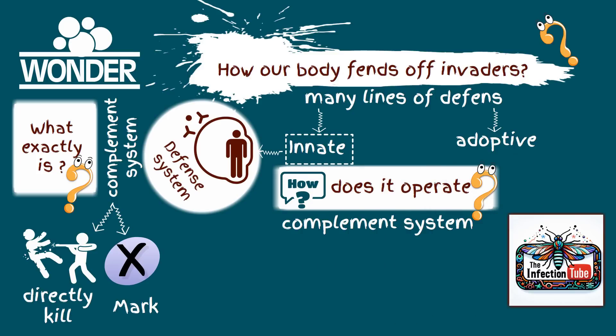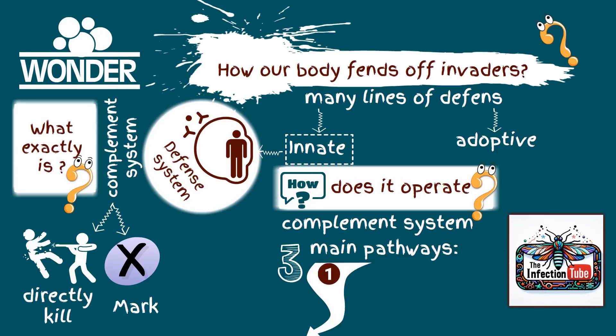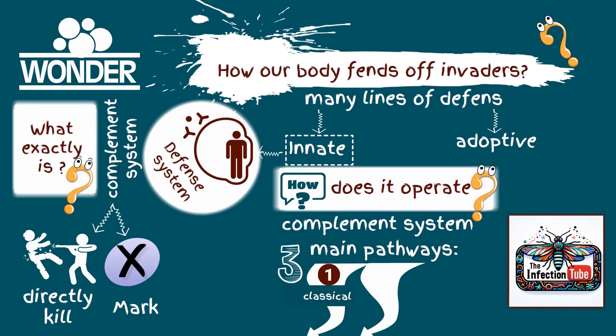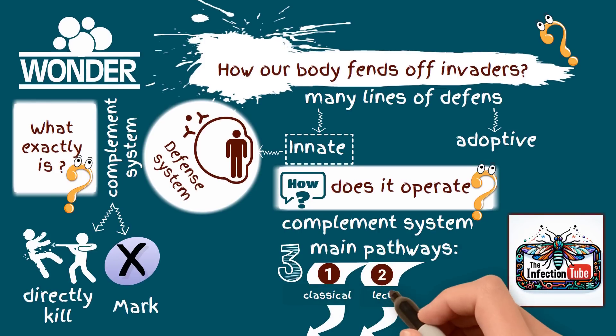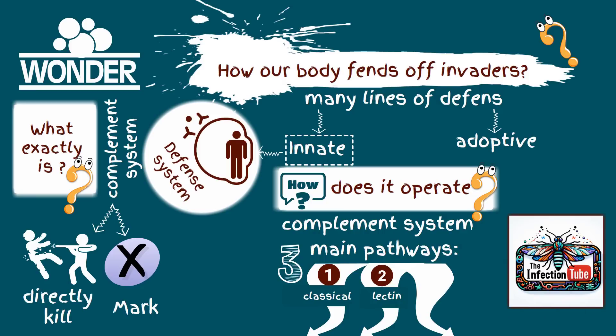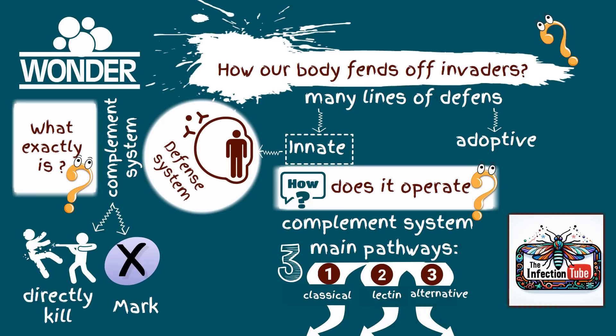The complement system functions through three main pathways: 1, the classical pathway, 2, the lectin pathway and finally, 3, the alternative pathway.